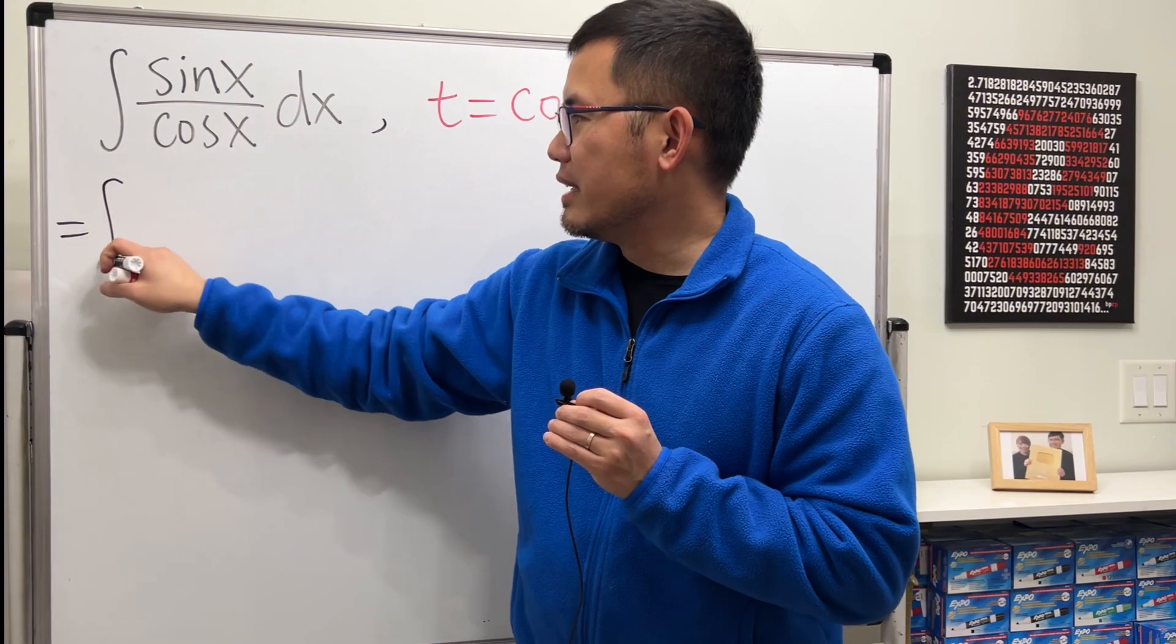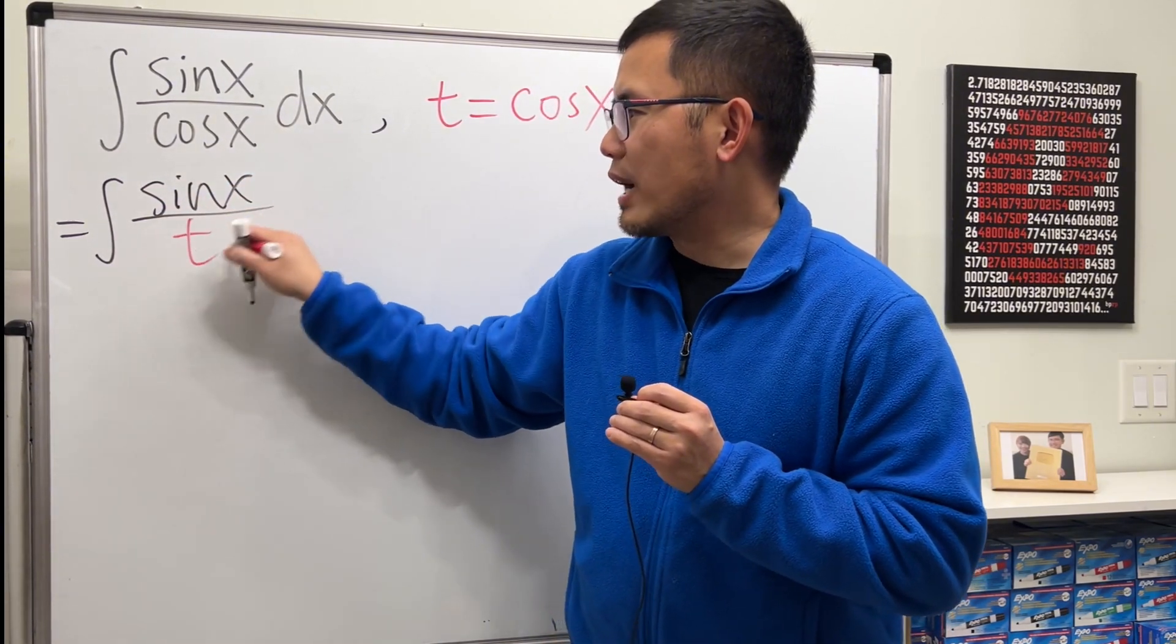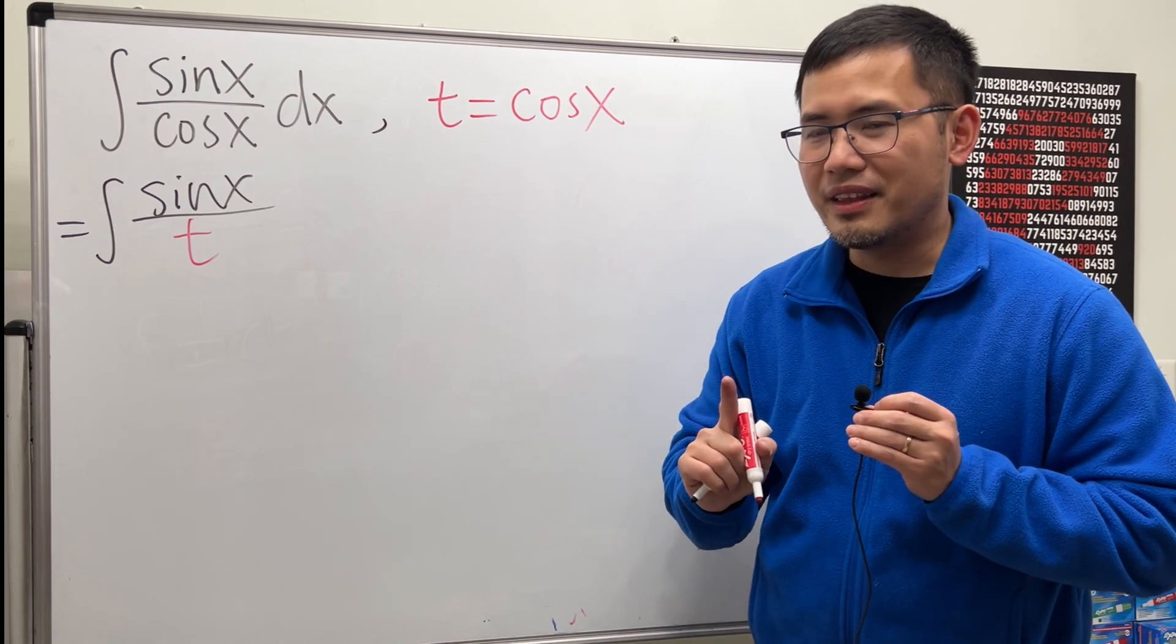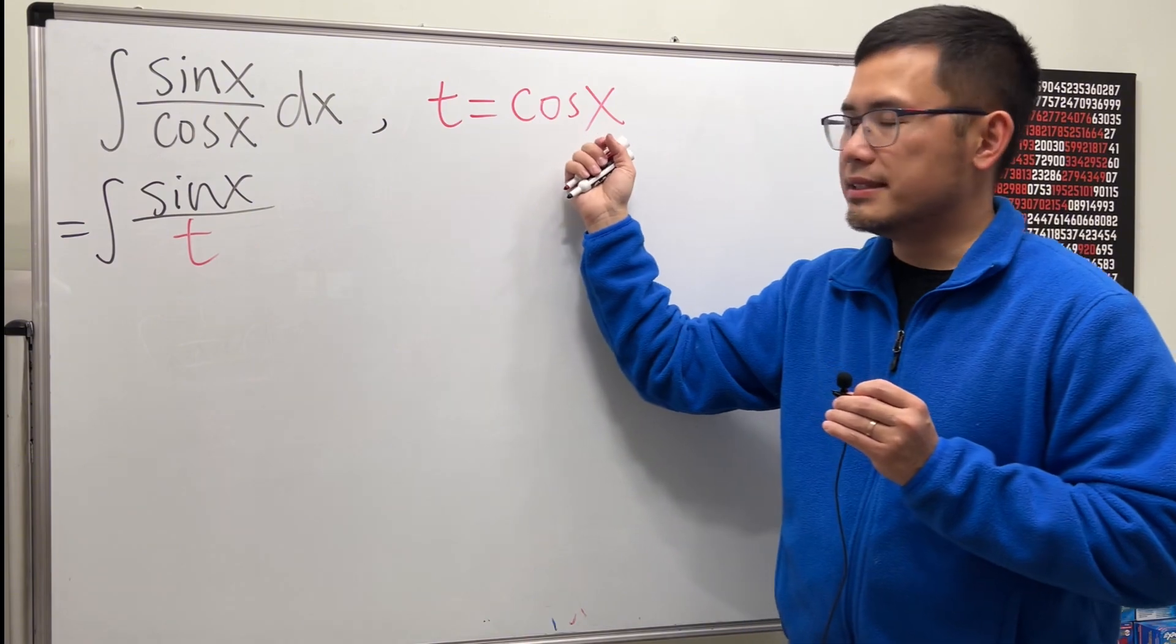It looks like we just have the integral of sin x over t, right? But here's the thing. Right here, we also have to get the dx from this equation.